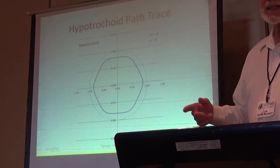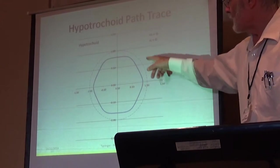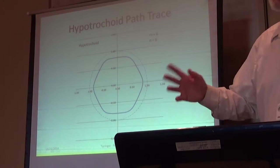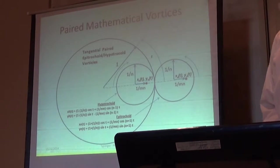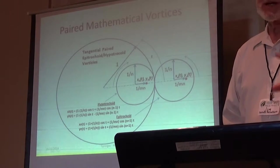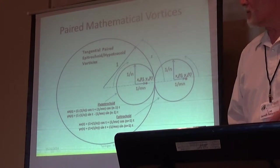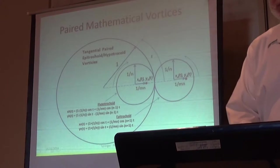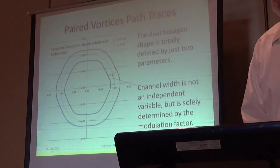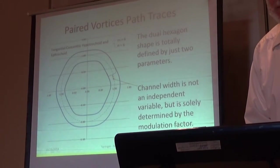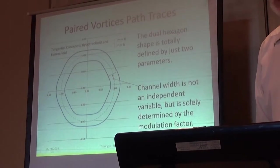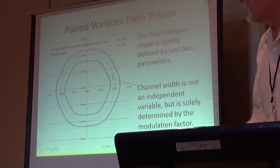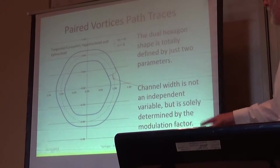So if you have that pattern of six, you get this pattern here, which is pretty close to hexagon. Now, if you do a pair, one inside and one outside, the epitrochoid and the hypotrochoid, you get these two hexagons. And the shape is pretty close to a hexagon.